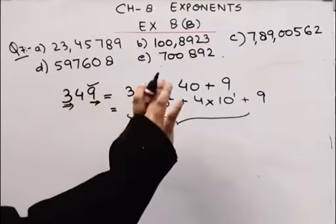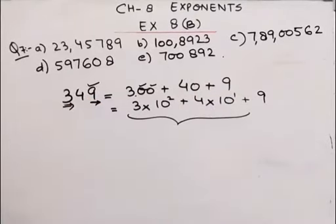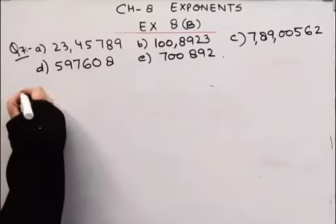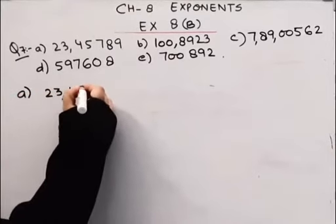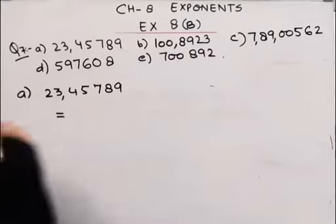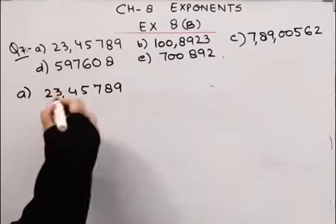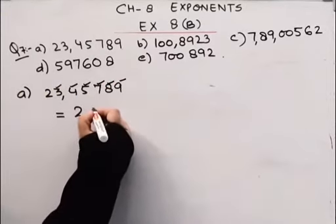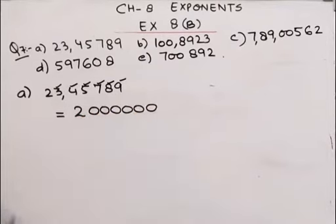Let us write the number. How many zeros? 2, 3, 4, 5, 7, 8, 9. This can be written as 2. After 2, how many zeros are there? 1, 2, 3, 4, 5, 6. So I'll put 1, 2, 3, 4, 5, 6.